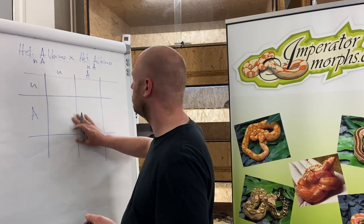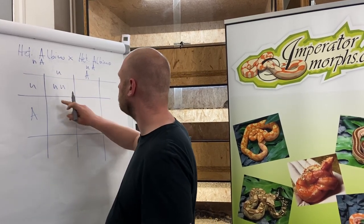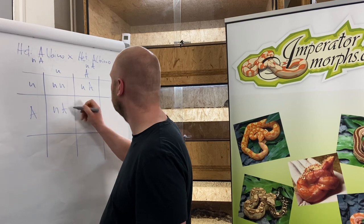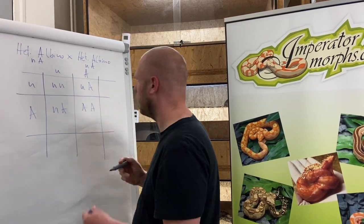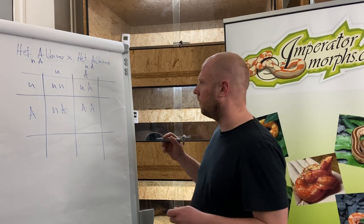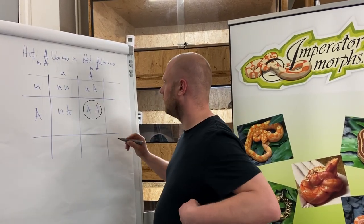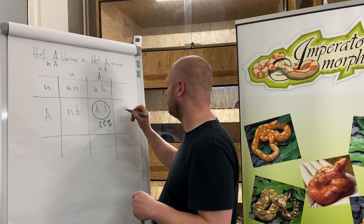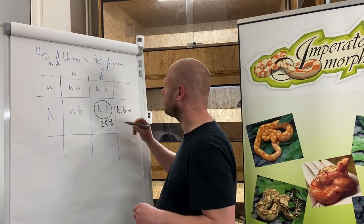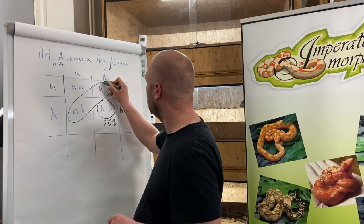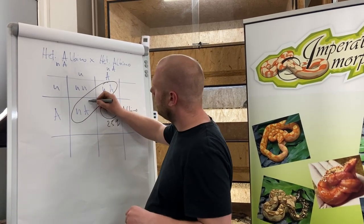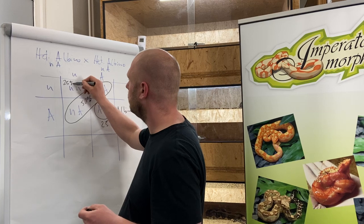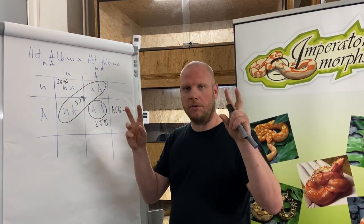This is what it looks like, and now we are multiplying every single square to each other and we are getting this result. 25 percent of the litter are visual albinos, 50 percent of the litter are 100 percent het albino, and these 25 percent are regular wild type.